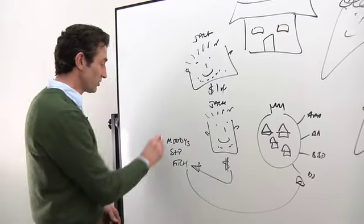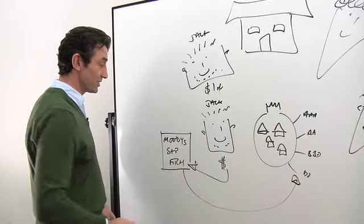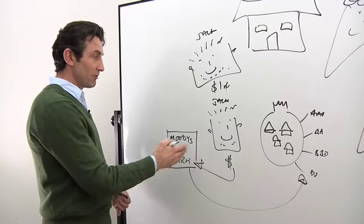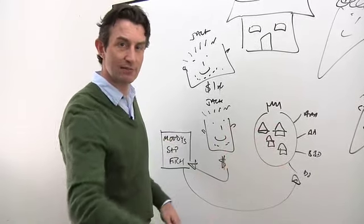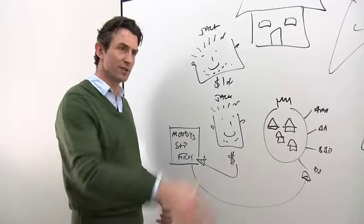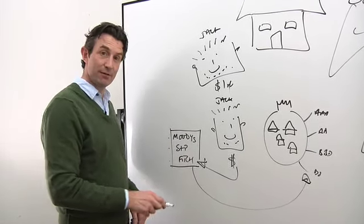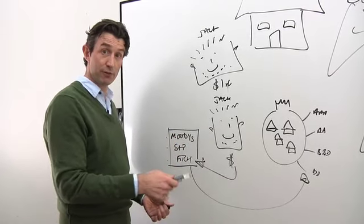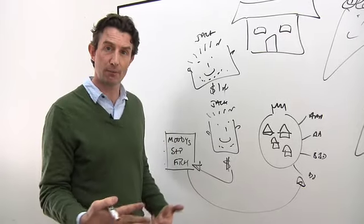All right. Now here's the issue, or another part of the issue, is that these three ratings agencies are competing for business. And Jack isn't just issuing one set of securities. He might be issuing securities all the way down the line. It might be a very big institution who could be issuing securities for years. So there's a bit of an incentive there, you might think, for one of these ratings agencies, or for the ratings agencies, to compete for Jack's business.